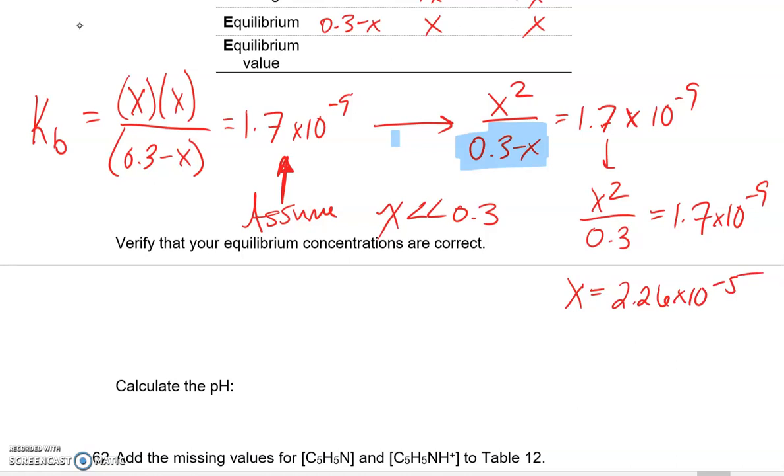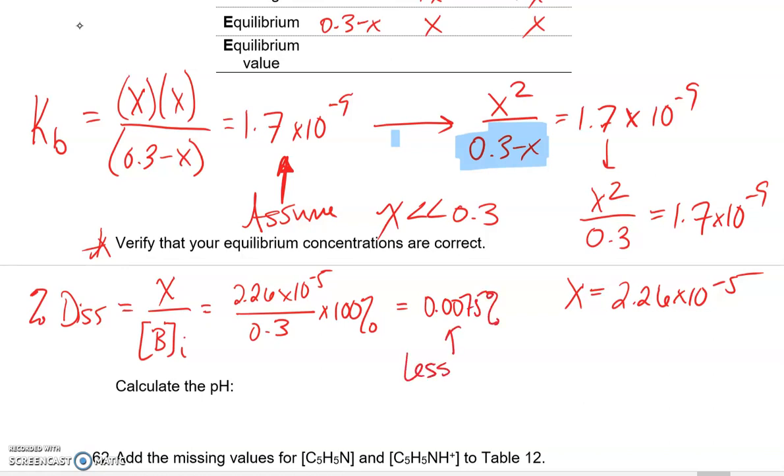Now, a really big important thing to check now is this verification. Calculate my percent dissociation and make sure I didn't mess up. Make sure that assumption is valid. My percent dissociation is less than five. I know percent dissociation is equal to X over my base initial. So that will be 2.26 times 10 to the minus fifth over 0.3 times 100%. And that gives me a percent dissociation of 0.0075%. And that right there is definitely less than 5%. So that means my assumption was valid.